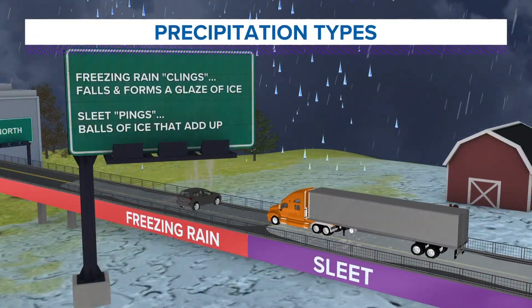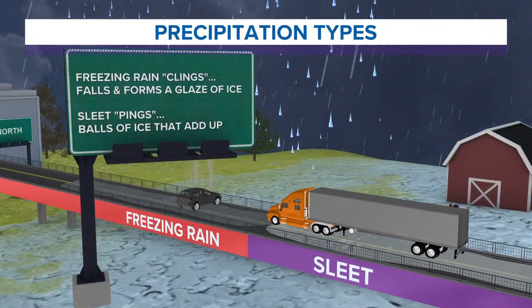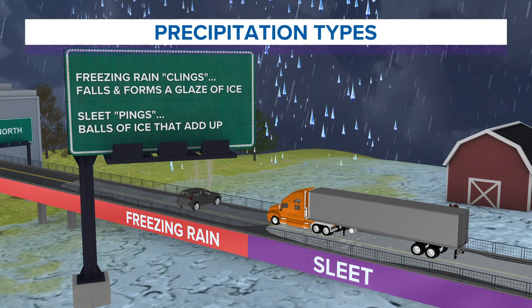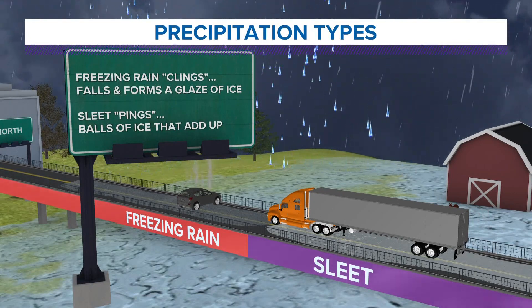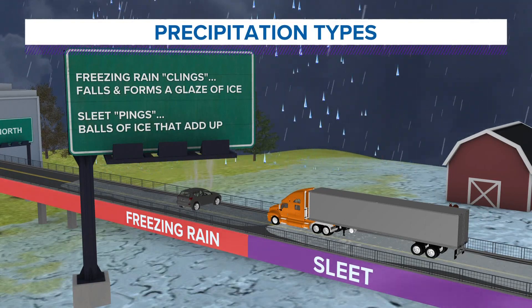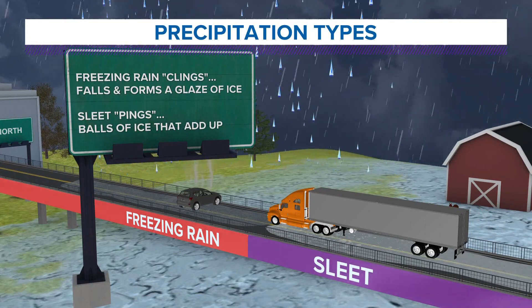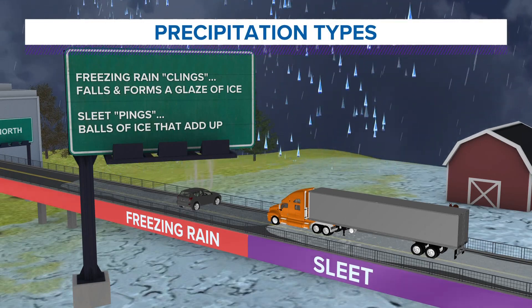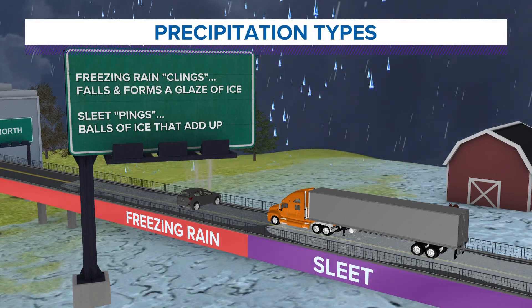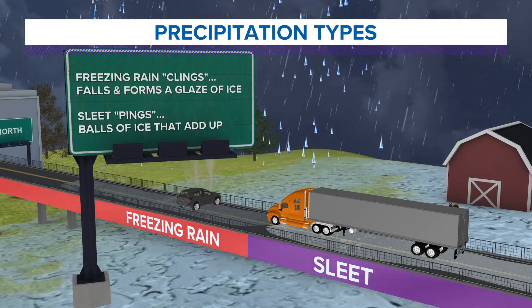When you look at it, sleet — you can visibly see it bouncing off the ground, you can hear it. Freezing rain looks like rain; it just forms a layer on the ground.